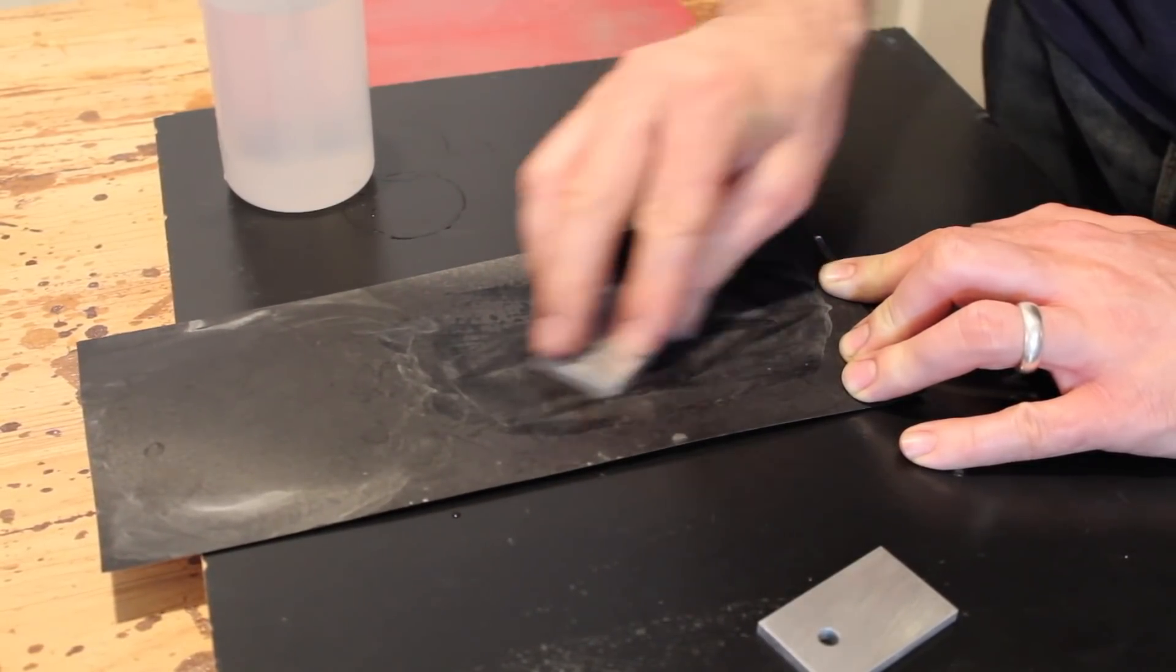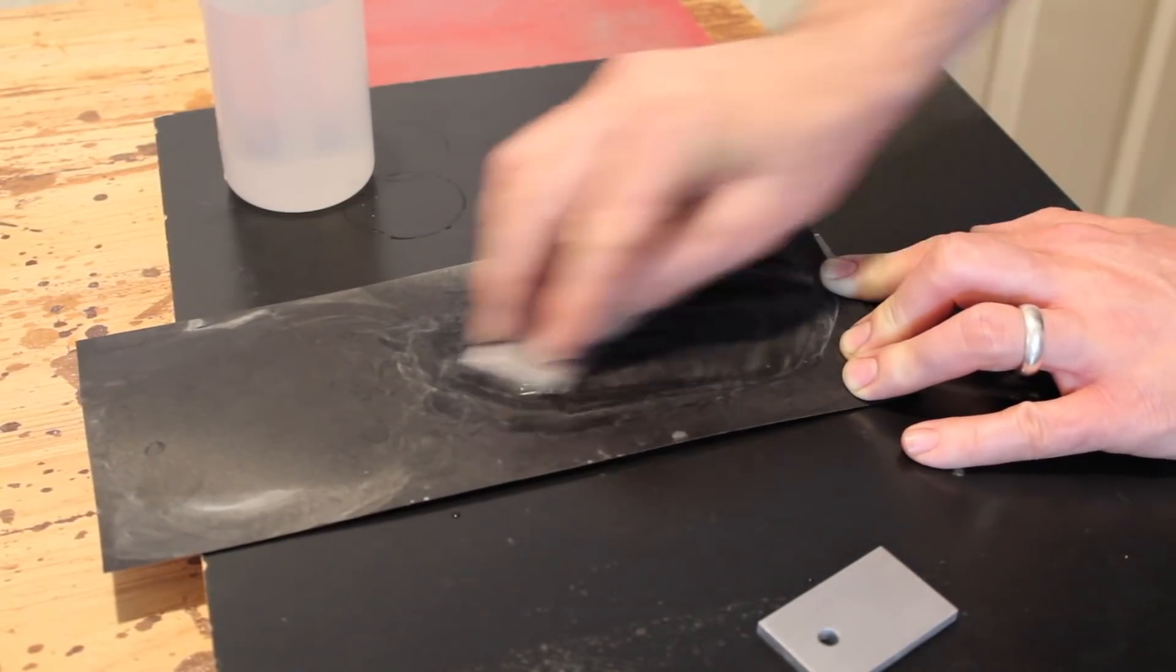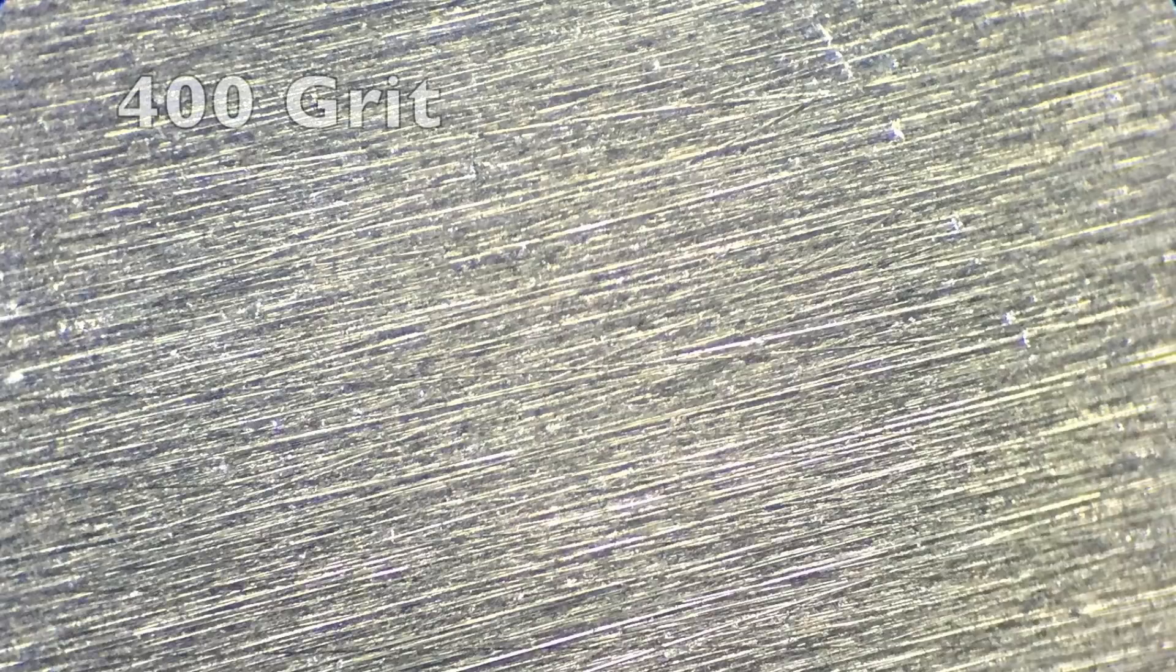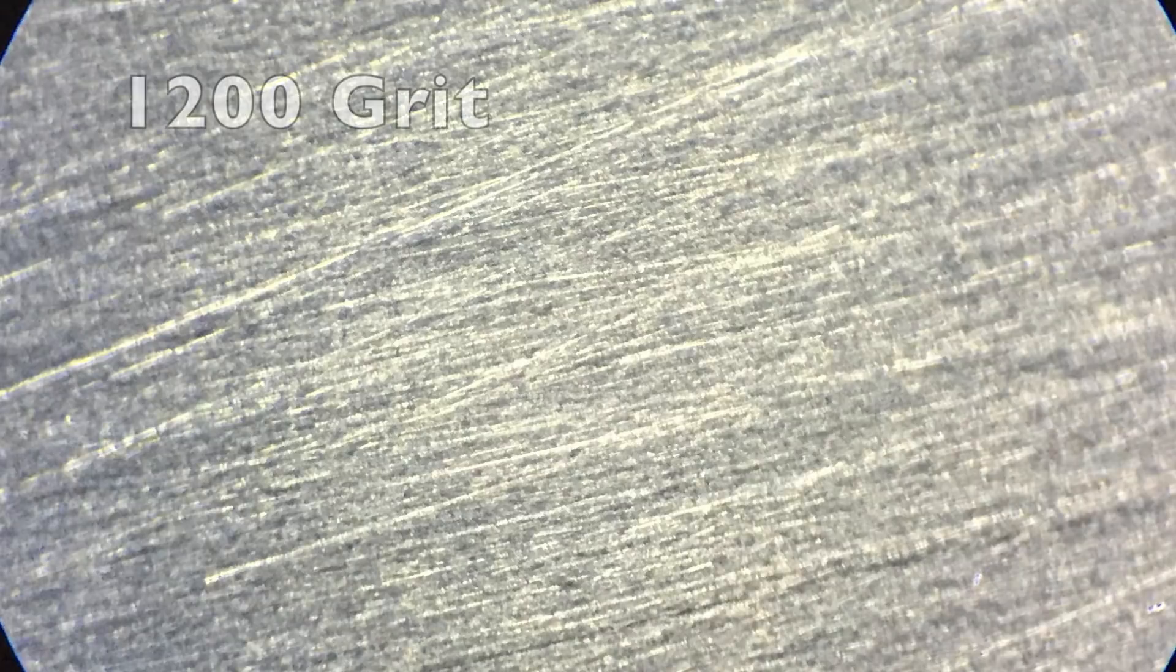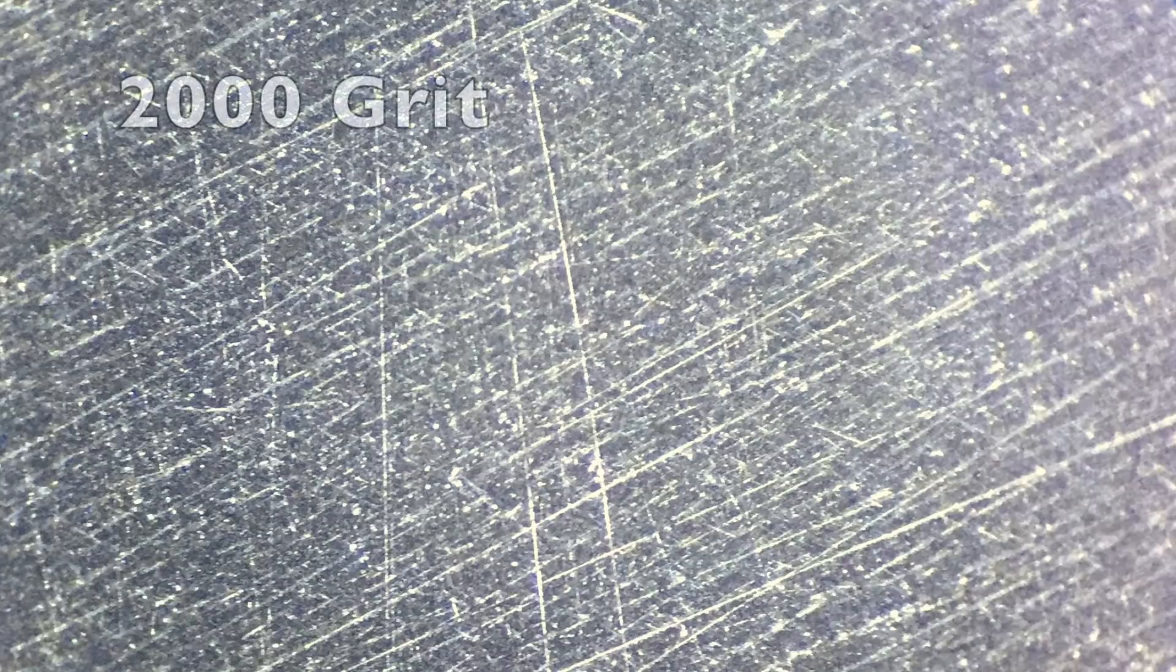I also stuck the pieces under a microscope to see what was happening. Here is the surface at 400 grit. Here's the surface at 600. At 1200. And at 2000. And you can see it's really starting to smooth down.